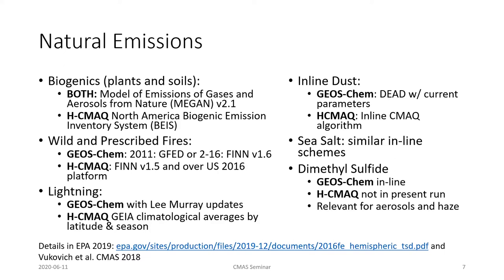For wildfires, it's a bit different between the two systems. GeosChem was using GFED, and we tried a trial run of FINN version 1.6 before that was retracted, then used hemispheric CMAC with FINN version 1.5. Over the US, Canada and Mexico, fires come from the 2016 platform rather than FINN 1.5. For lightning, GeosChem has a representation produced by Lee Murray with his latest updates integrated for 2016. Hemispheric CMAC uses a climatological average lightning that's been spatially and temporally allocated, but it is a climatological average.